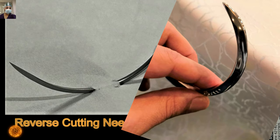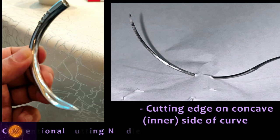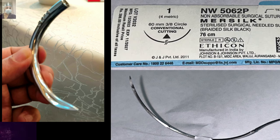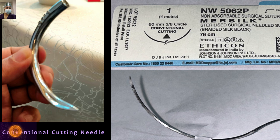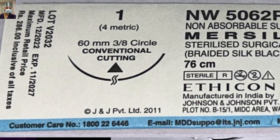The next most common needle is the conventional cutting needle. In the conventional cutting needle, the cutting edge is towards the concave side — the inner side of the needle. As you pass the needle through tissue, the cutting edge is basically towards the wound margin, so there is a possibility of tearing or tissue damage. On the leaflet, there is number one silk. You can see the triangular logo on the needle showing that the cutting edge is towards the concave inner side. The 60 mm is the shaft length and three-eighths is the circle circumference used — this is a conventional cutting number one silk suture.